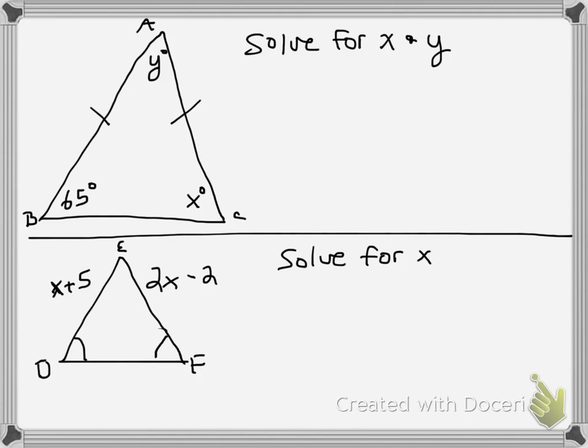And one thing that I know is that because these two sides are congruent, that means that these two angles have to be congruent. So I know automatically that x is equal to 65 degrees. I don't have to do any calculations for that.